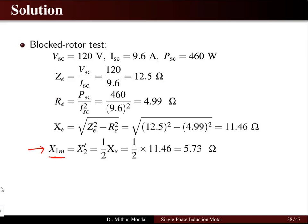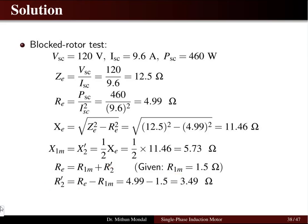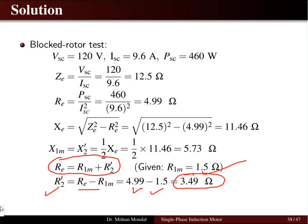The stator reactance equals the rotor reactance referred to the stator side — each is half of the total reactance value of 11.46 ohms, giving 5.73 ohms each. Since the stator winding resistance R1 is 1.5 ohms and the total resistance equals stator resistance plus rotor resistance referred to the stator side, we can find the rotor resistance referred to stator as the total resistance minus R1. Substituting these values gives 3.49 ohms as the rotor resistance referred to the stator side.